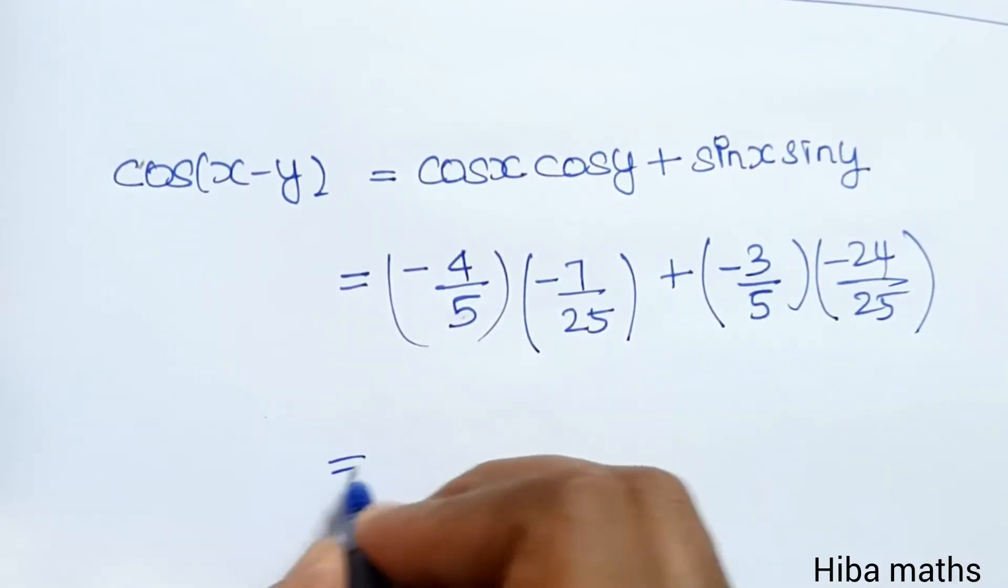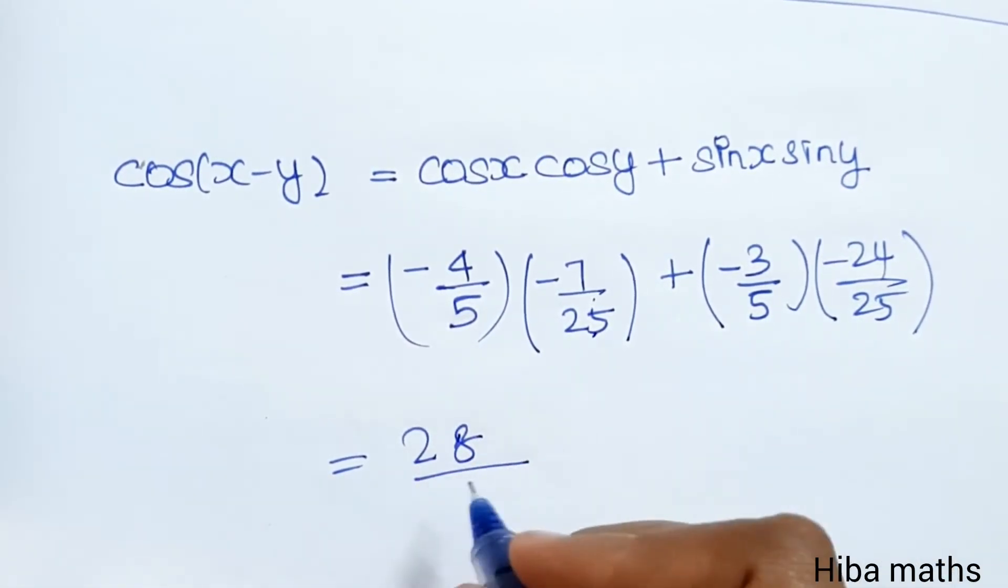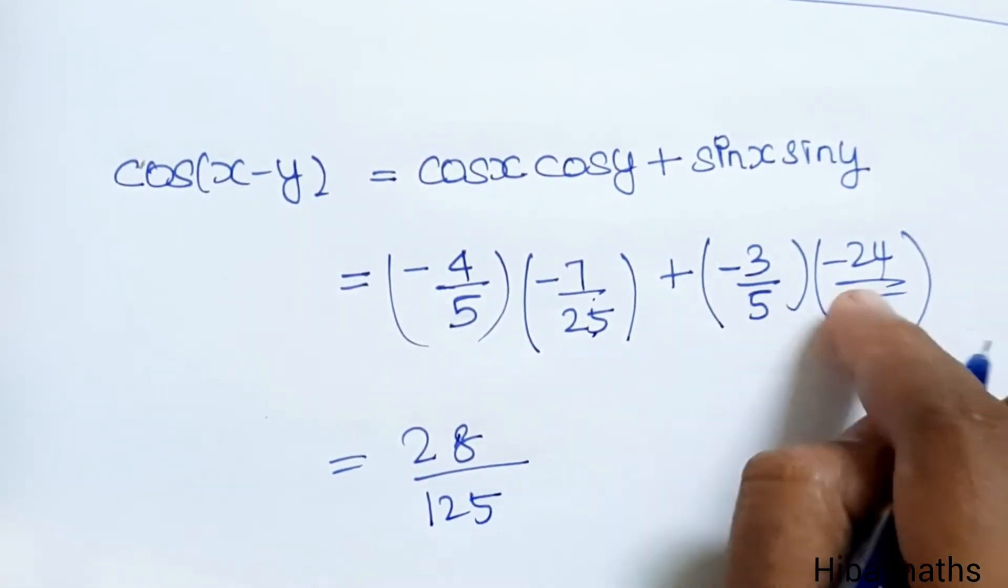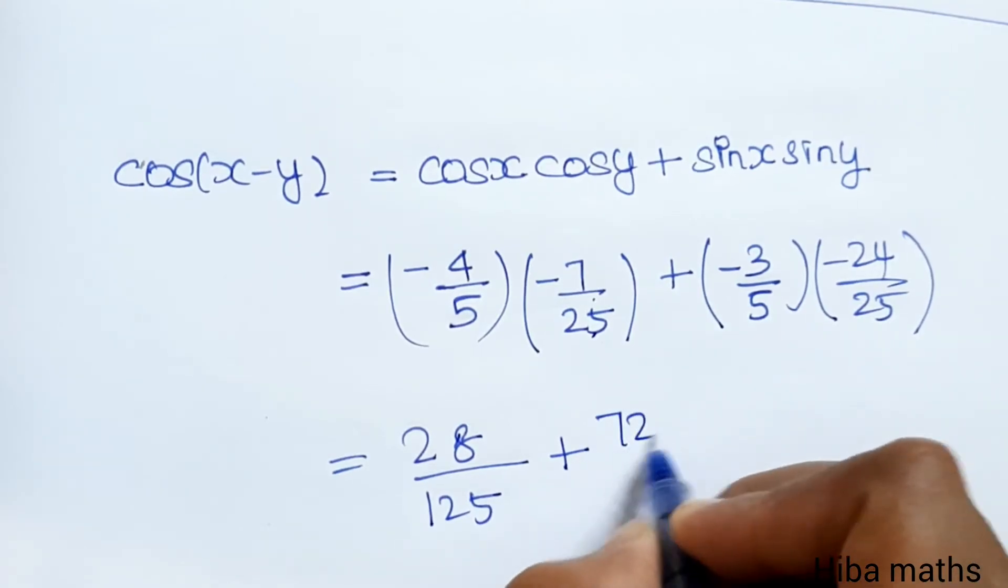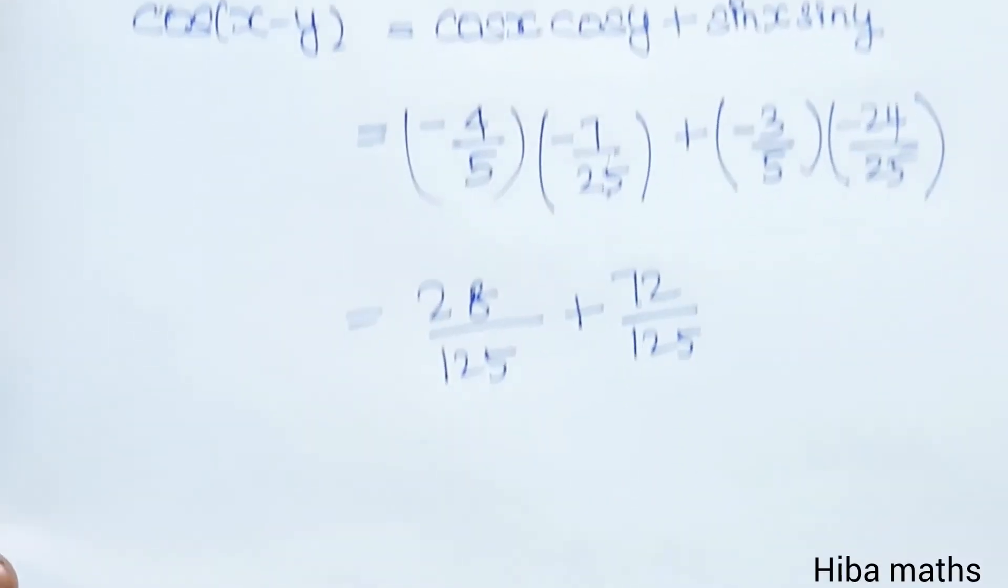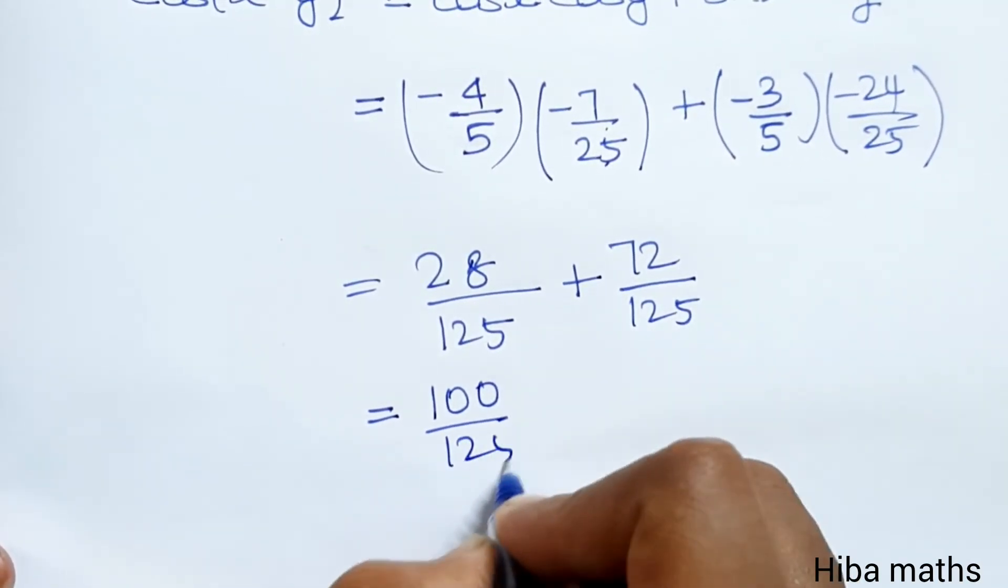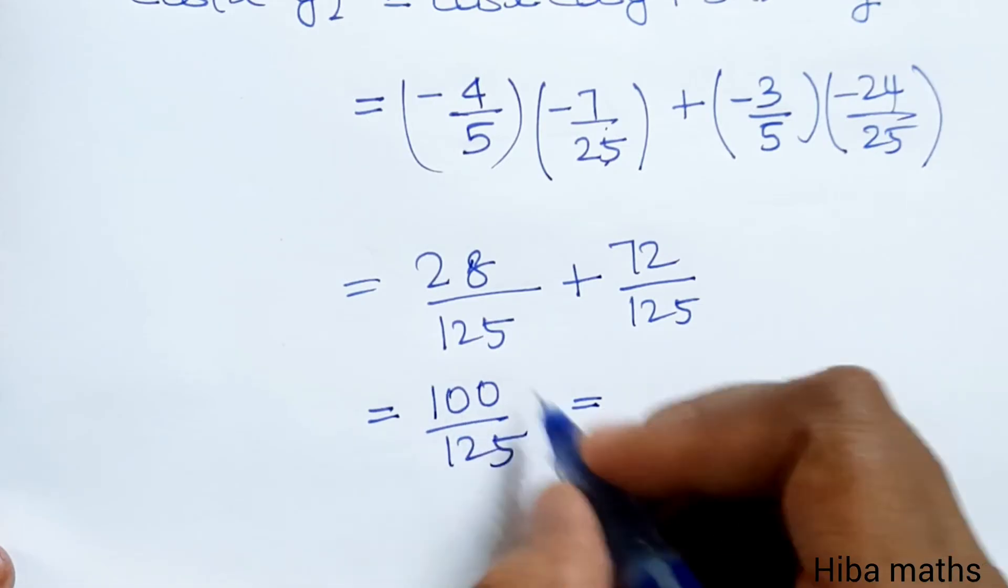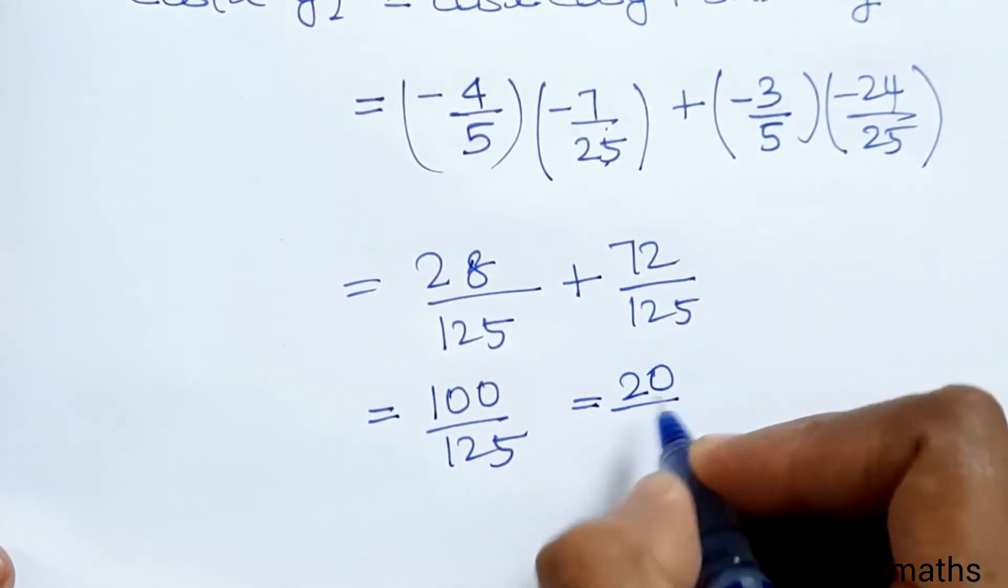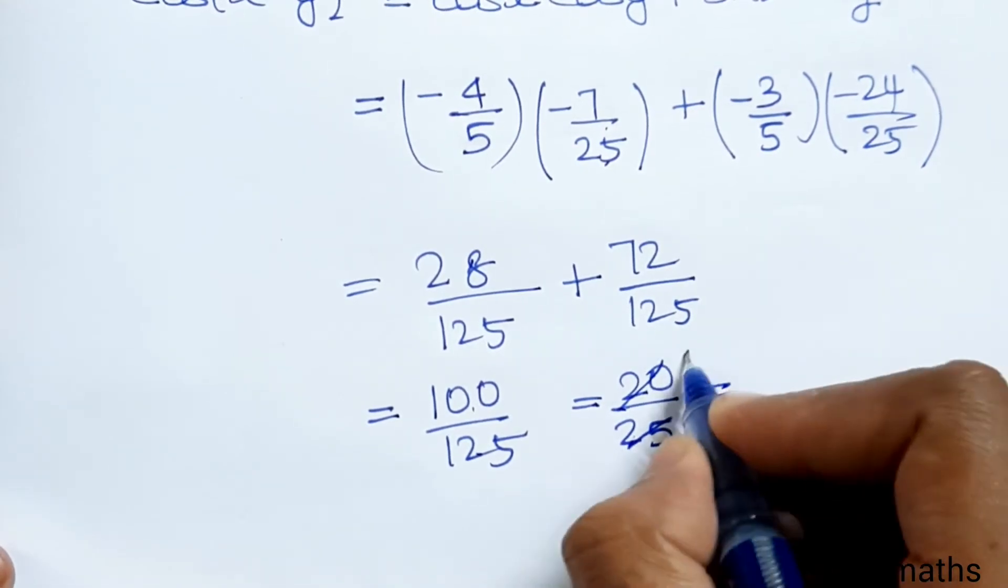Minus into minus is plus. 4 times 7 is 28, 5 times 25 is 125. Minus into minus is plus. 24 times 3 is 72 divided by 125. Adding these: 28 plus 72 is 100. 100 by 125, divide by 5: 5 times 20 is 100, 5 times 25 is 125. Cancel 5, we get 4 by 5.